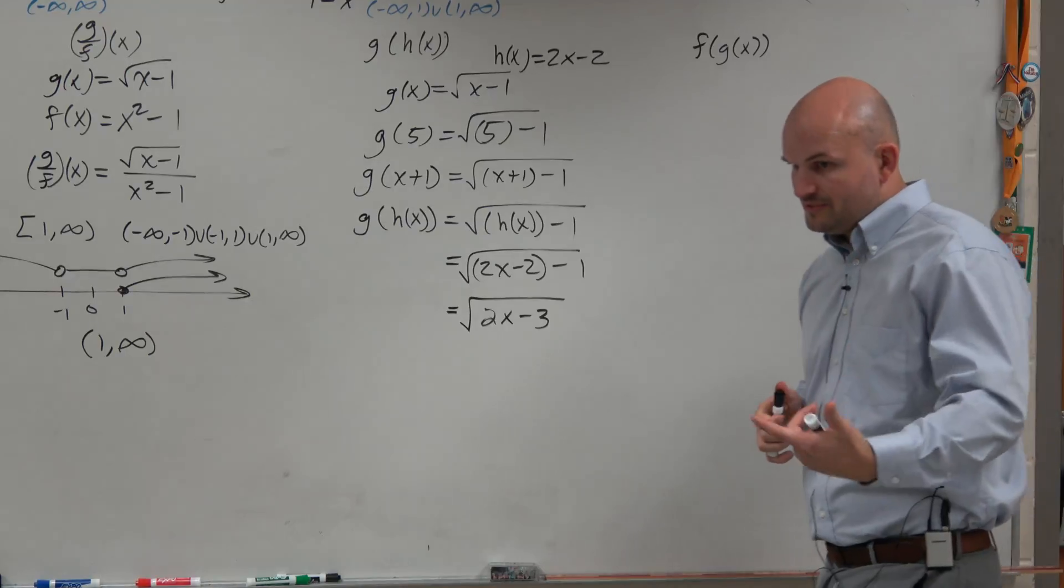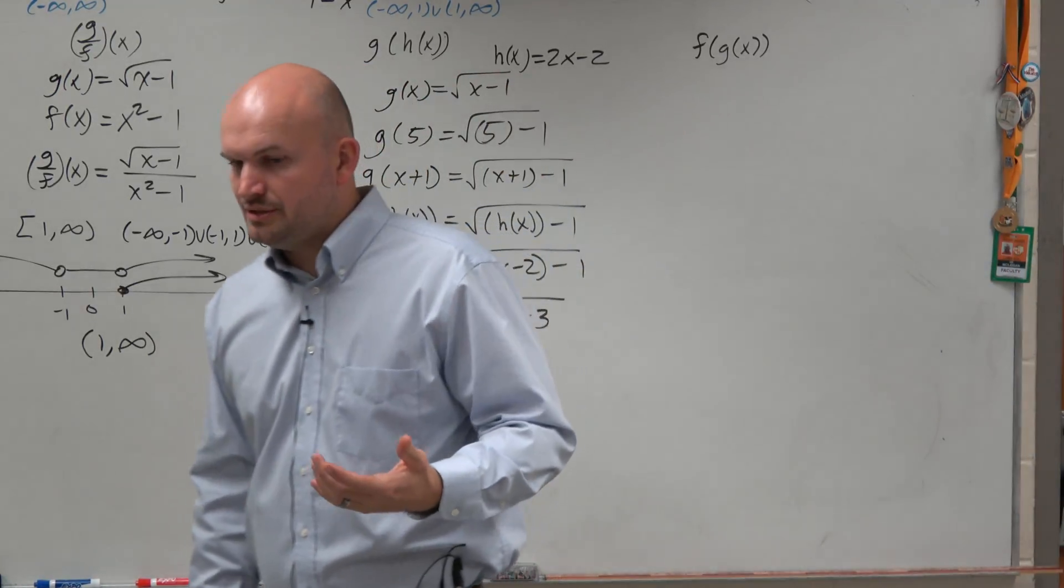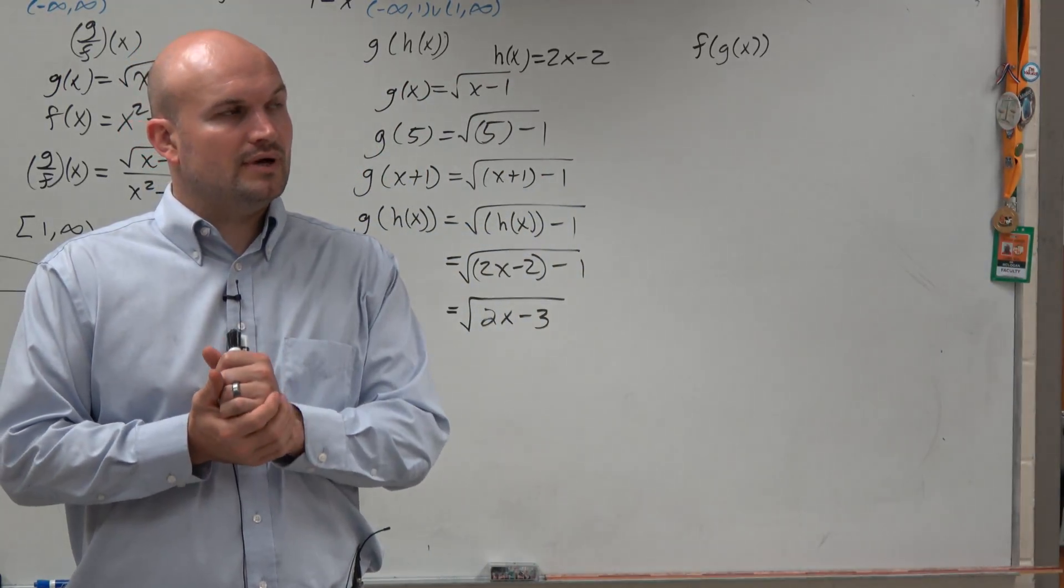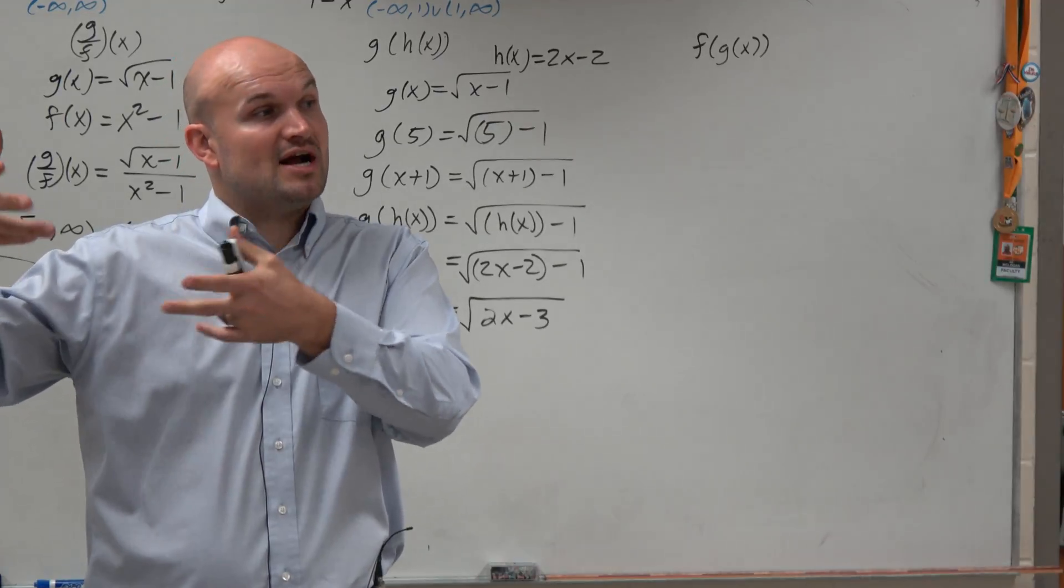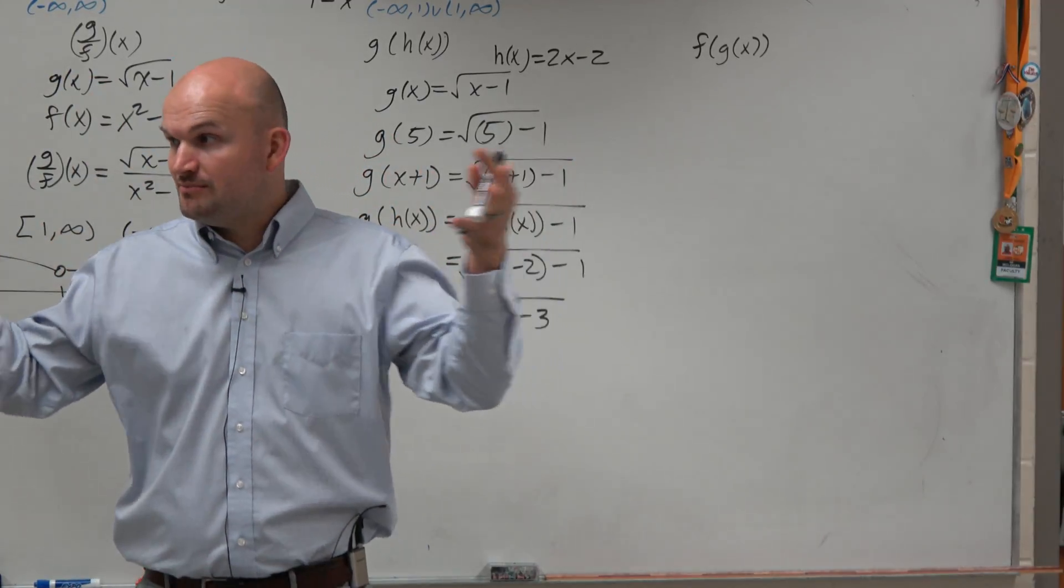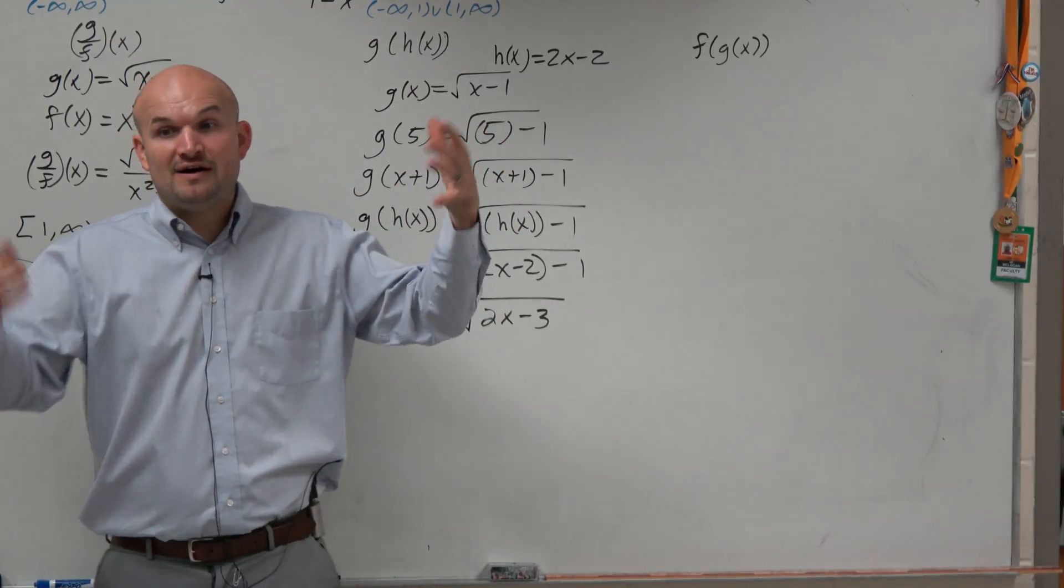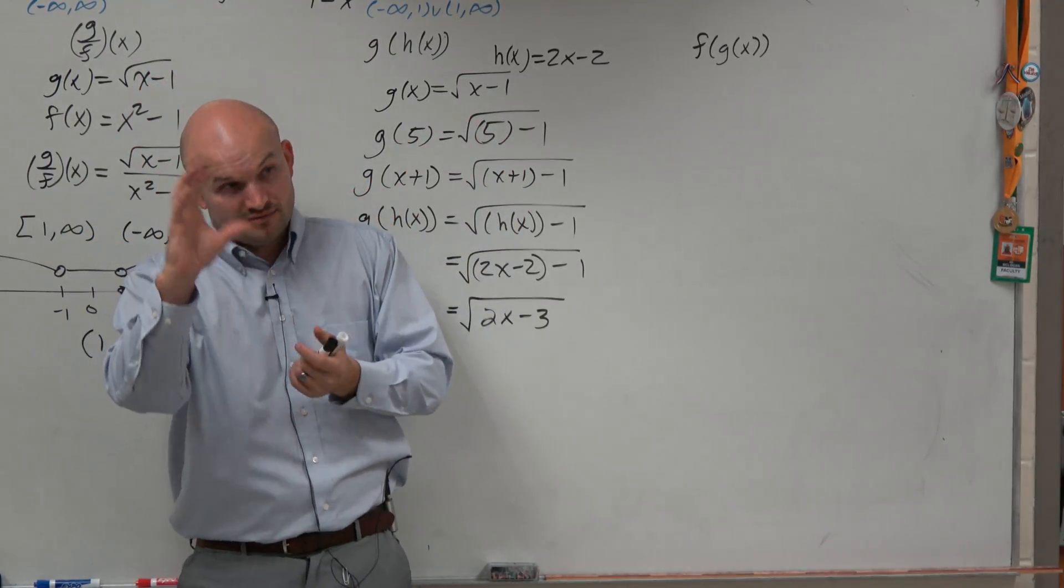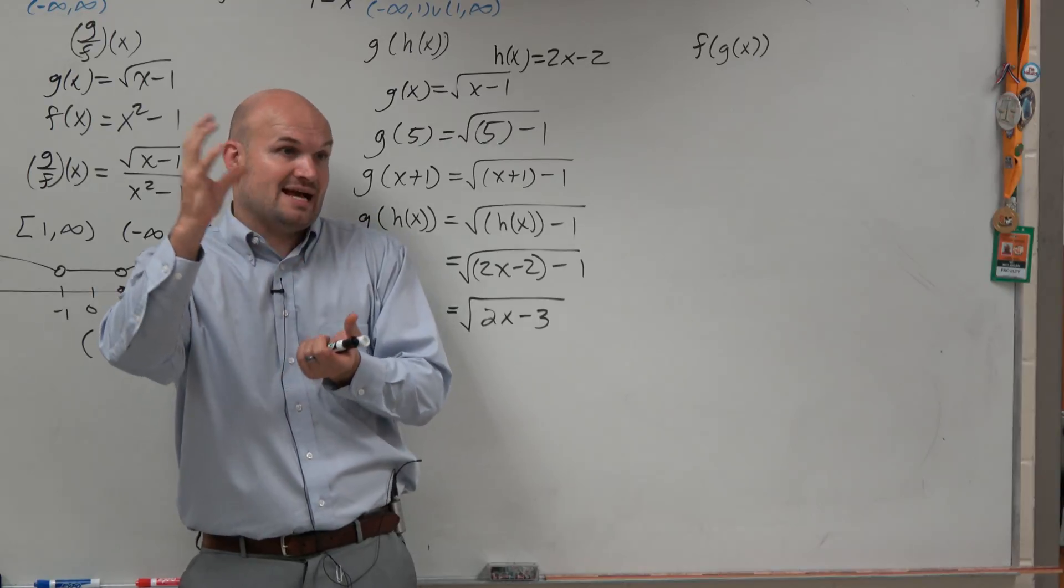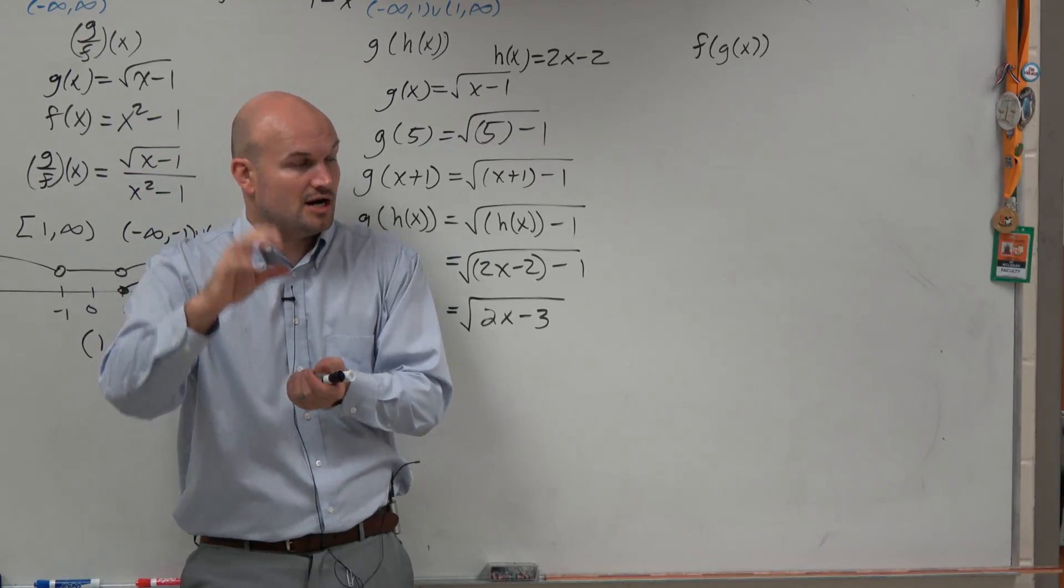So there's a couple things that are important when you're doing the composition. To revamp, when we added, subtracted, or multiplied, we just combined the two domains, right? Just found the intersection of the domains. When you divided, you found the intersection of their division, basically, and of their each original domain as they are.